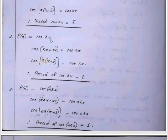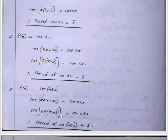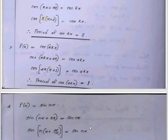For f of x equals cos πx: cos π(x plus b) equals cos πx implies π times b equals 2π, so the period is 2. The fundamental period is 2. For f of x equals cos 2πx: cos 2π(x plus b) equals cos 2πx gives 2π times b equals 2π, so the fundamental period is 1.